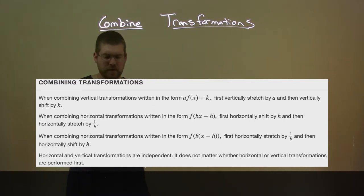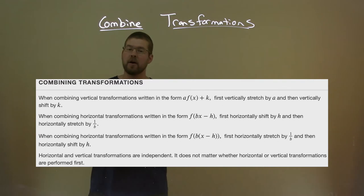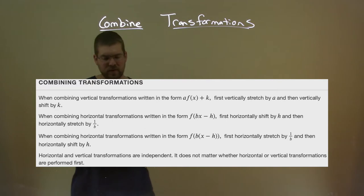When combining horizontal transformations written in the form f(BX minus H), first horizontally shift by H, and then horizontally stretch by 1 over B.